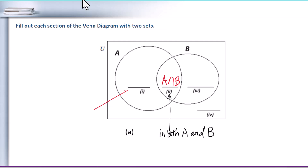Section 1 means only A. When you say 'only,' it implies not B. So A intersection B' is the set for section 1.